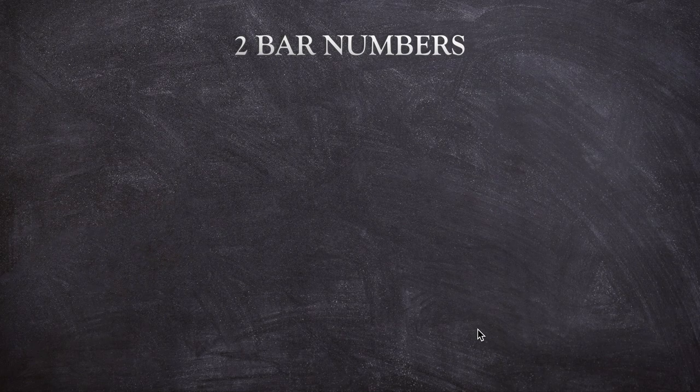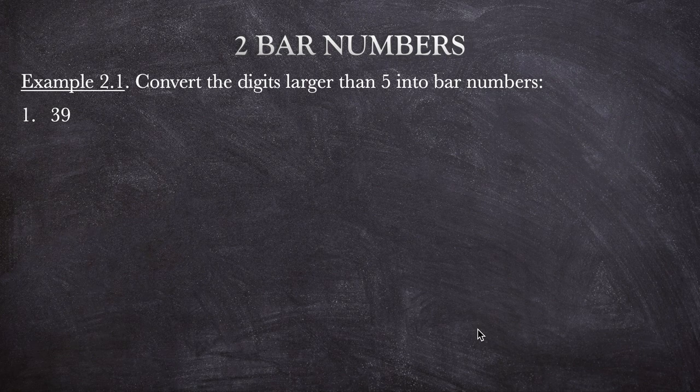Let's convert digits larger than 5 into bar numbers. For 39: 9 is larger than 5, so we add 1 to 3, giving 4, and since the last digit is 9, apply 'last from 10' — that gives 4 bar 1.